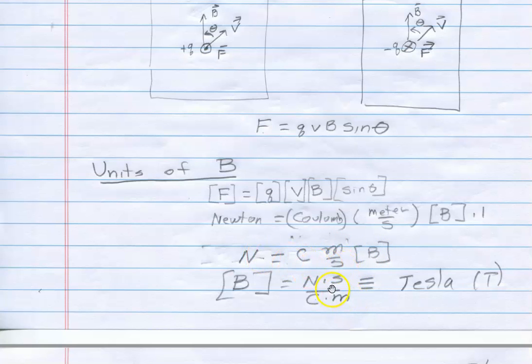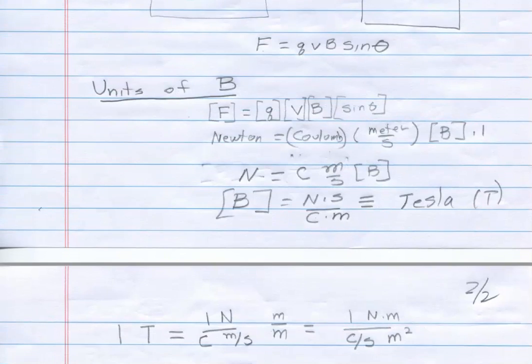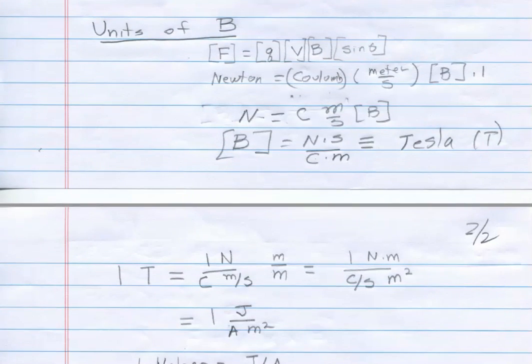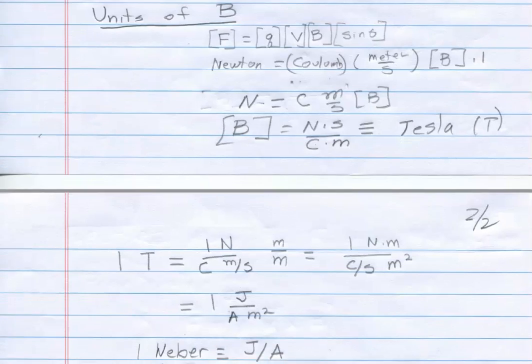So to do that, I have to multiply through by the seconds and divide through by the coulomb meters. And so the unit of magnetic field is this expression in terms of newton seconds, coulombs, and meters. That is given a name after Nikola Tesla, and so that is a Tesla. One Tesla is one newton second per coulomb meter, and Tesla is abbreviated capital T.